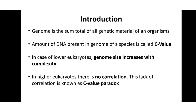Another example: the haploid nuclear genome of Protopterus aethiopicus, commonly known as the marbled lungfish, is composed of 132.8 billion base pairs, while the haploid nuclear genome of humans is only 3.2 billion base pairs. This lack of correlation between genome size and complexity is known as the C value paradox. The paradox means contradictory to its own set of statements — so the statement that genome size increases with complexity is contradicted by these examples.